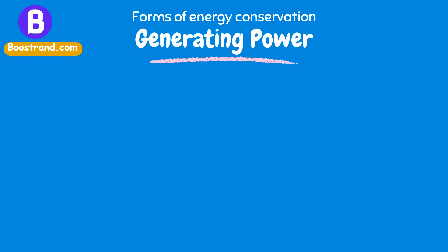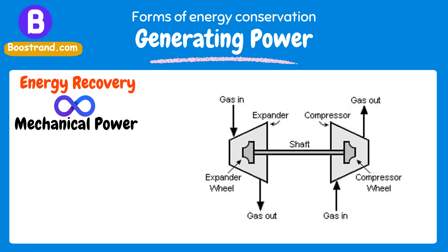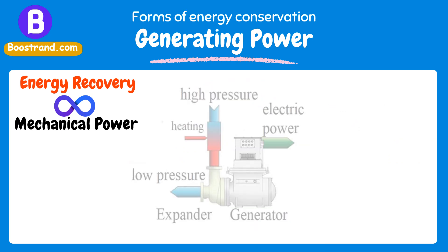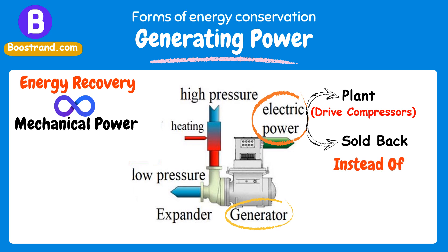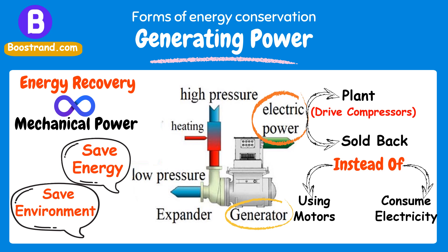The third way is generating power. Energy recovery is not just related to heat transfer, but is also commonly used in mechanical power. A famous example is the use of turbo expanders to generate mechanical power that can drive gas compressors. Turbo expanders are mechanical devices that remove energy from a high-pressure process gas stream, resulting in a simultaneous drop in both pressure and temperature, and the removed energy is converted into mechanical energy. Generator-loaded turbo expanders convert the recovered energy into electricity, which can be used within the plant or sold back to the local electrical grid. Otherwise, if we have compressors in our process, they can drive the compressors instead of using electric motors consuming megawatts of electricity. This shall result in significant energy savings and much less gas to be burnt for power generation, which means less carbon emissions.